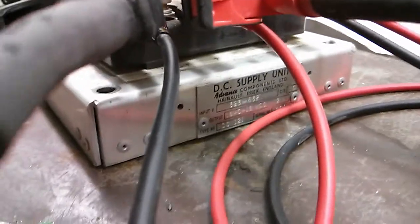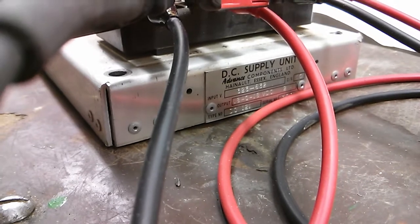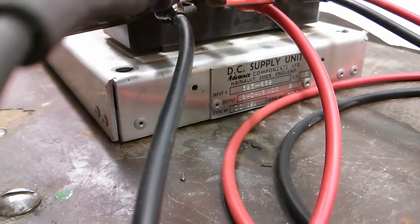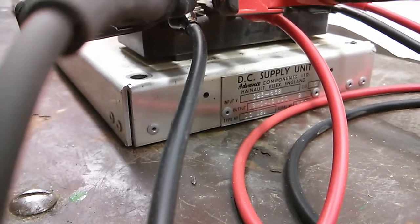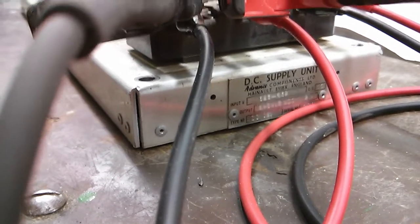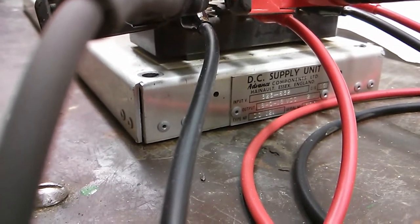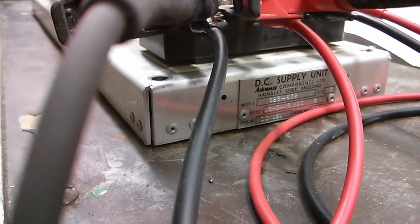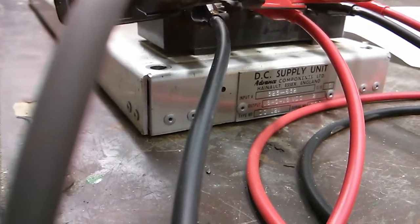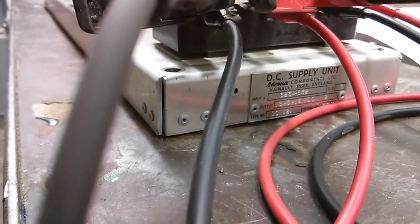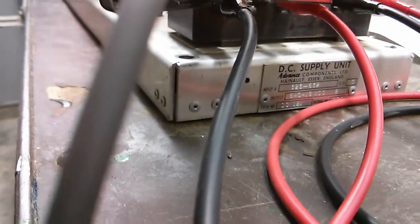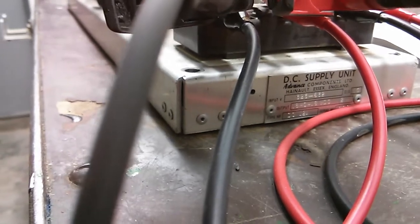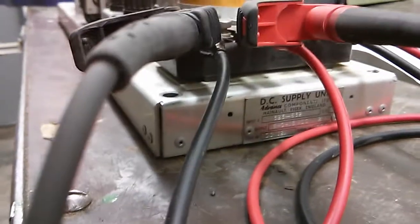It's a DC supply unit. Advanced Components Limited, Hanel, Essex, England. 323 to 632 volts input. Output is 180+180 volts DC. So that's 36 volts at 2 amps. Type DC 1-1, I believe that is. Zero number 109. Cycles per second.